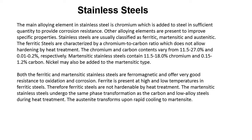Stainless steels are usually classified as ferritic, martensitic, and austenitic. The ferritic steels are characterized by a chromium-to-carbon ratio which does not allow hardening by heat treatment. The chromium and carbon contents vary from 11.5 to 27% and 0.1% to 2% respectively. Martensitic stainless steels contain 11.5 to 18% chromium and 0.15 to 1.2% carbon. Nickel may also be added to the martensitic type.